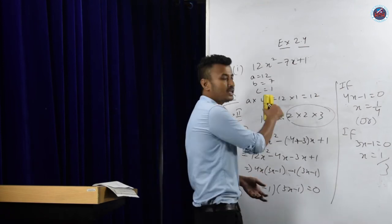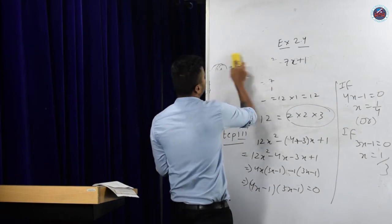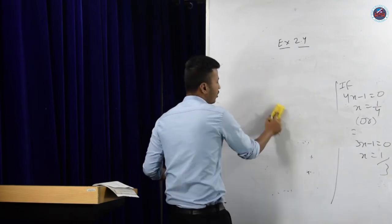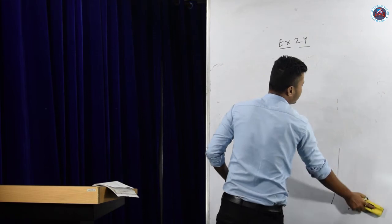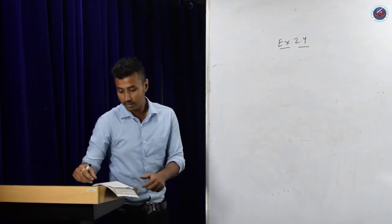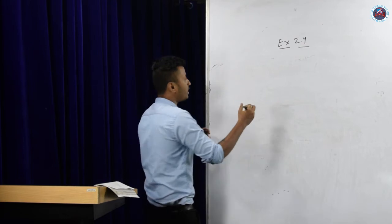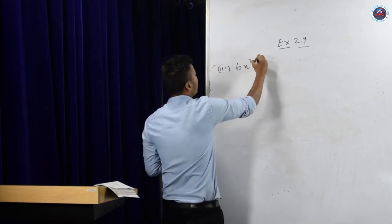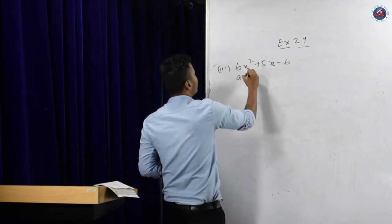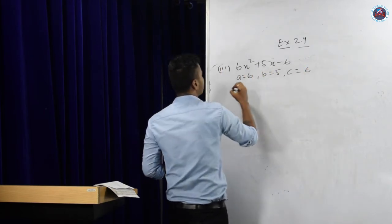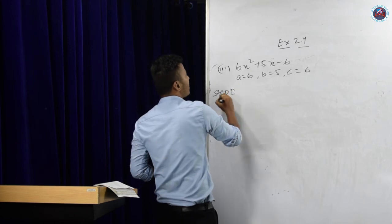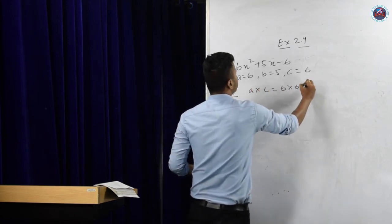Please copy this down and attempt all questions in your copy. Unless you practice mathematics, it will never be easy. Everyone says maths is tough — because they don't practice enough. Question 3: 6x² plus 5x minus 6. Here a = 6, b = 5, c = 6. Step 1: a into c = 6 into 6 = 36. Step 2: prime factorization of 36 gives 2 into 2 into 3 into 3.